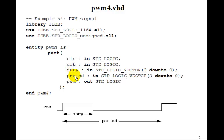We'll make duty and period four bits for this example, so each one's a three down to zero. The idea is we'll make a four-bit counter and count for how long the duty is high and then count for the period.